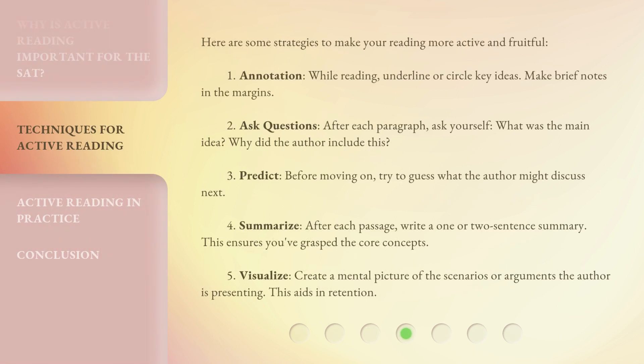Here are some strategies to make your reading more active and fruitful. 1. Annotation: While reading, underline or circle key ideas and make brief notes in the margins. 2. Ask questions: After each paragraph, ask yourself — what was the main idea? Why did the author include this? 3. Predict: Before moving on, try to guess what the author might discuss next. 4. Summarize: After each passage, write a one or two-sentence summary. This ensures you've grasped the core concepts.